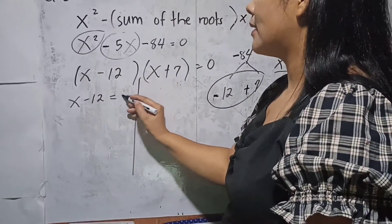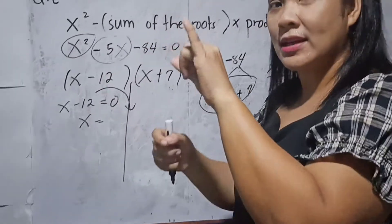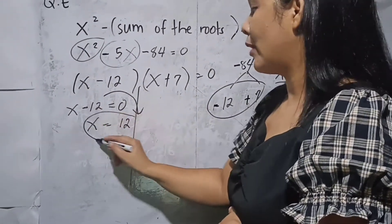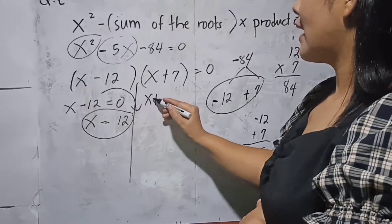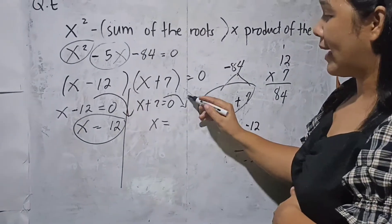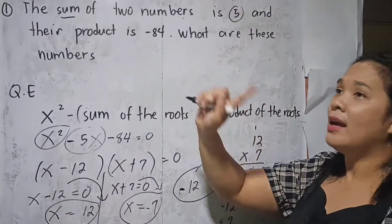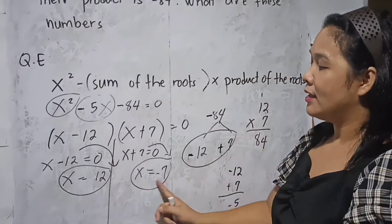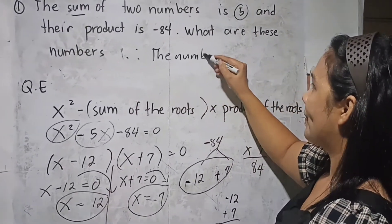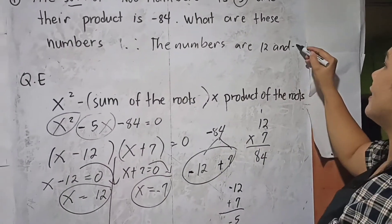Setting each factor to zero: x minus 12 equals 0 gives x equals 12. And x plus 7 equals 0 — transferring the 7 to the other side changes the sign — gives x equals negative 7. Therefore, the numbers are 12 and negative 7.